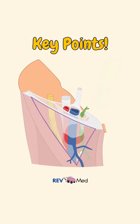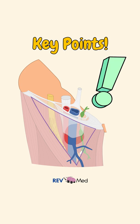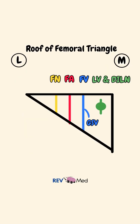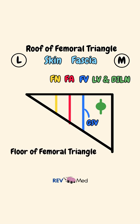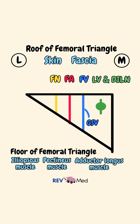Let's also quickly go over some important things to know. The roof of the femoral triangle is made of the skin and the fascia. The floor, from lateral to medial, is the iliopsoas muscle; the middle part is the pectineus muscle; and the most medial part is the adductor longus muscle.